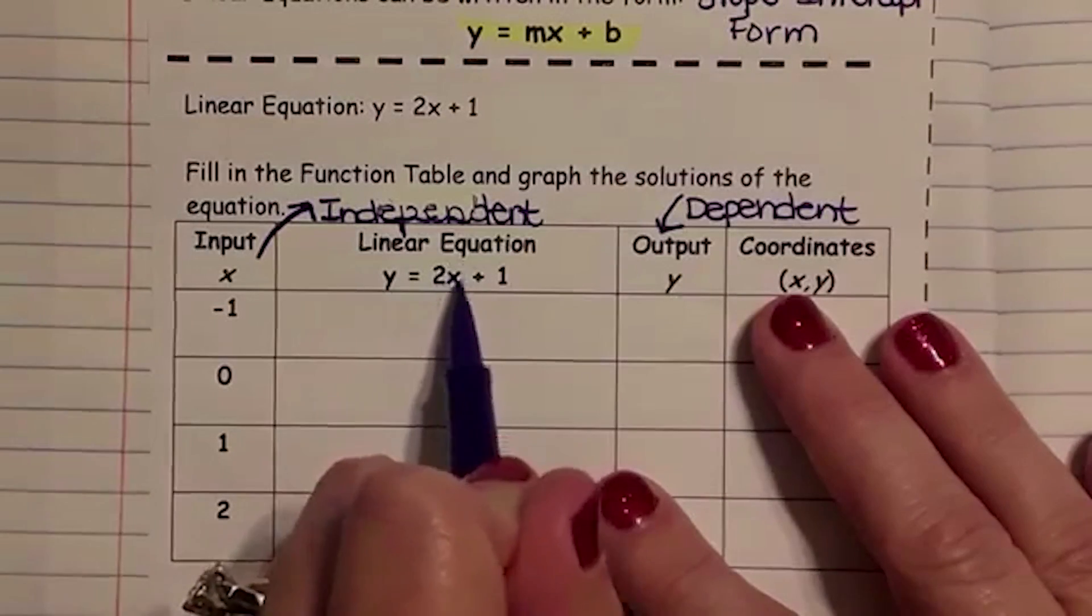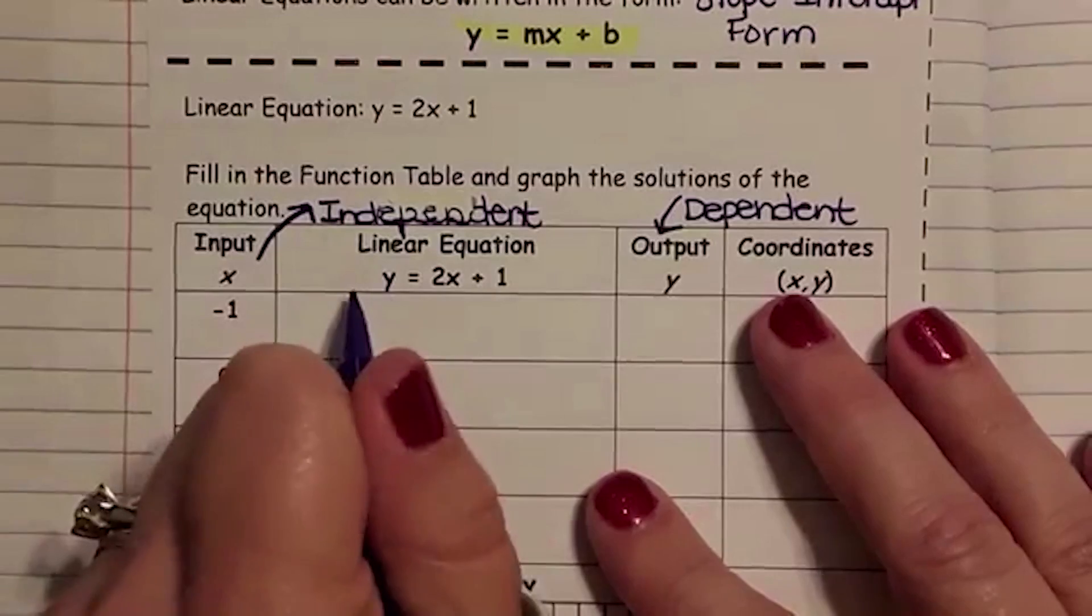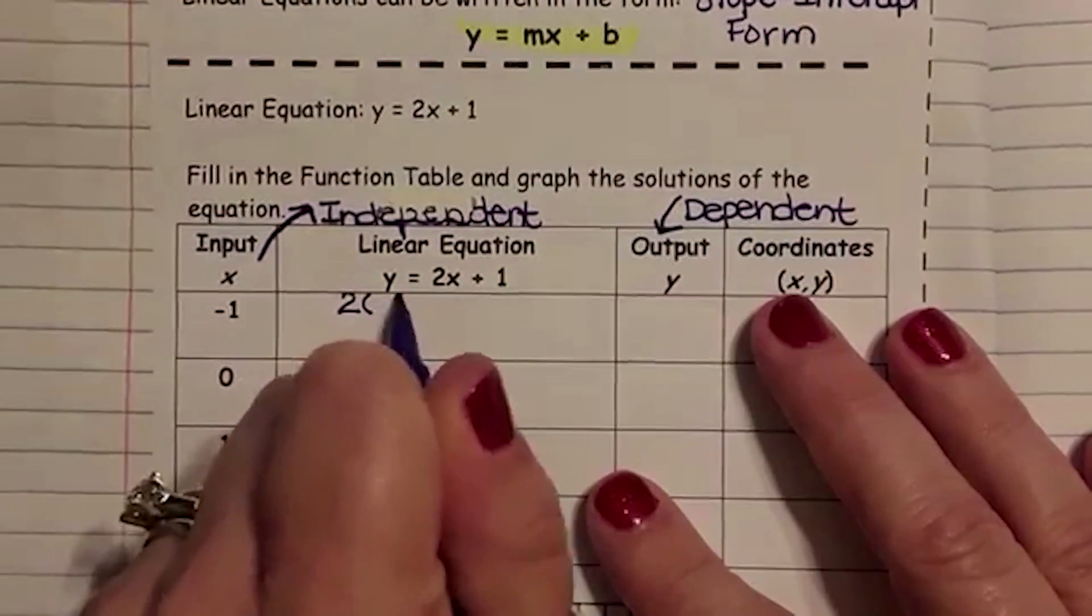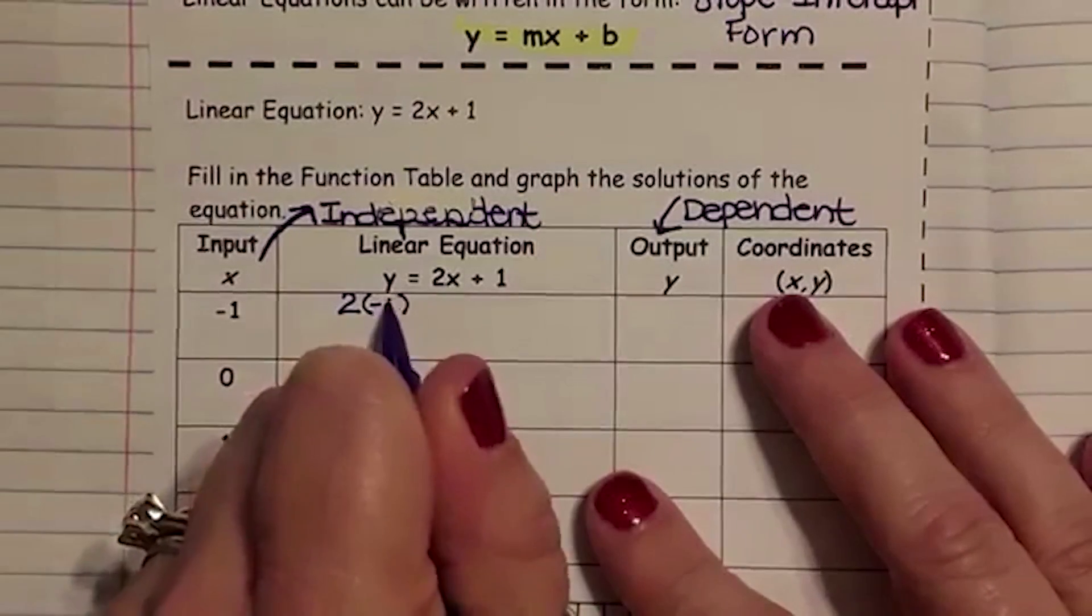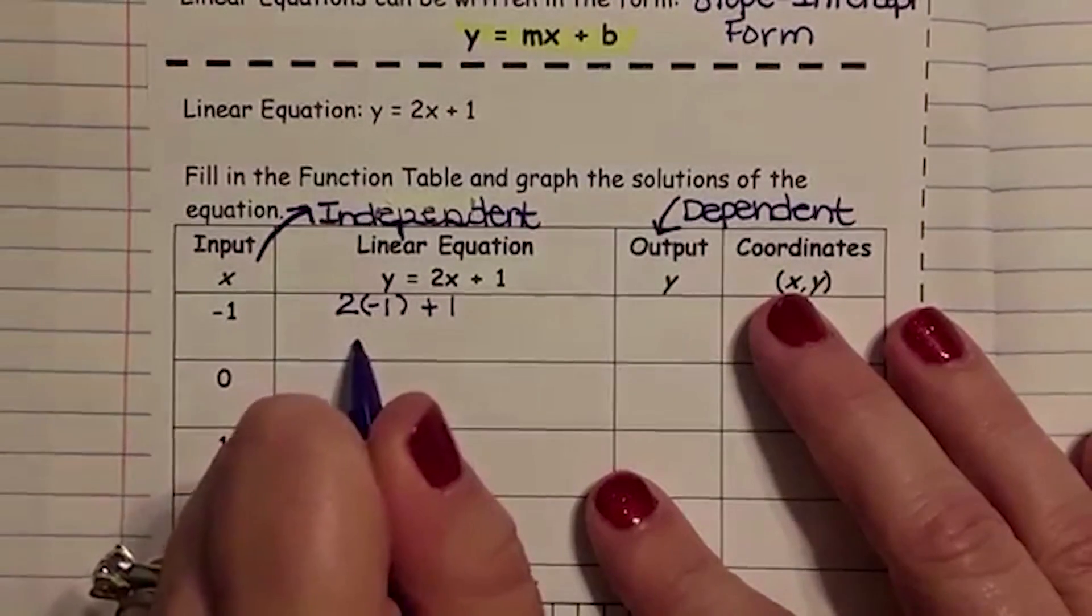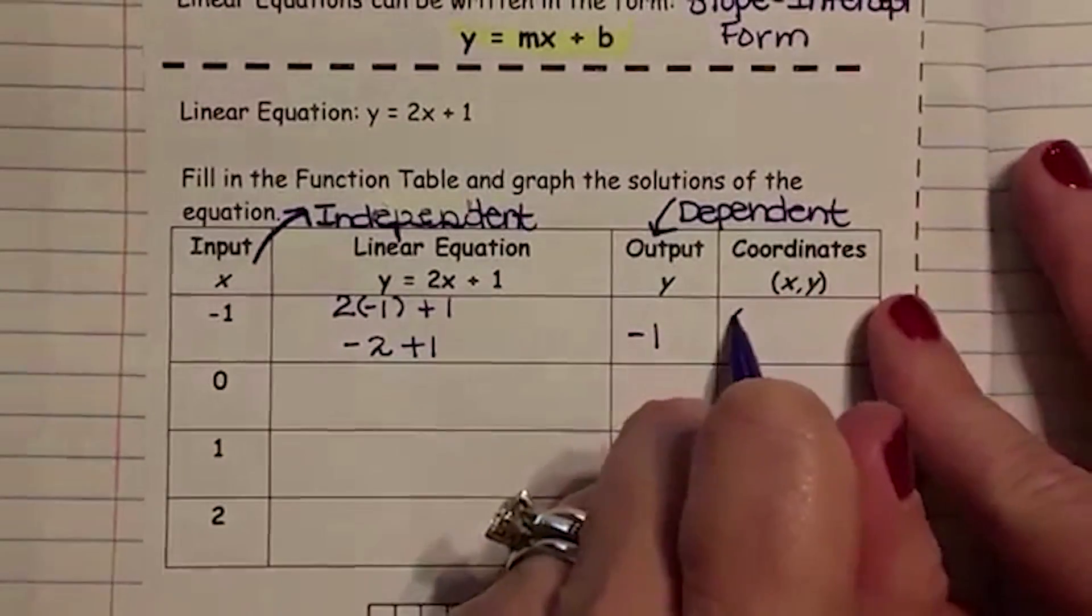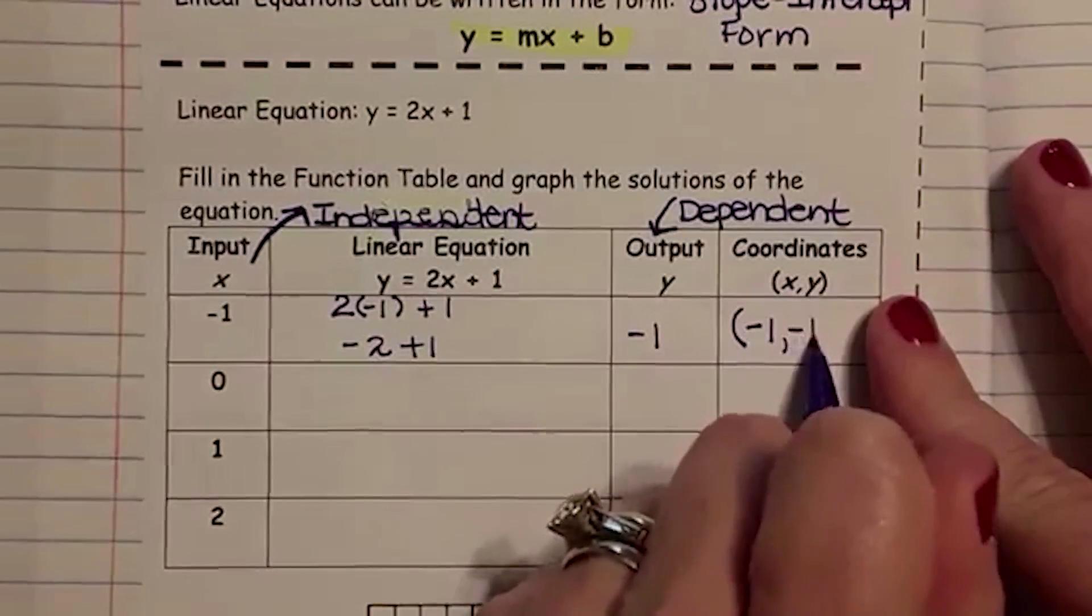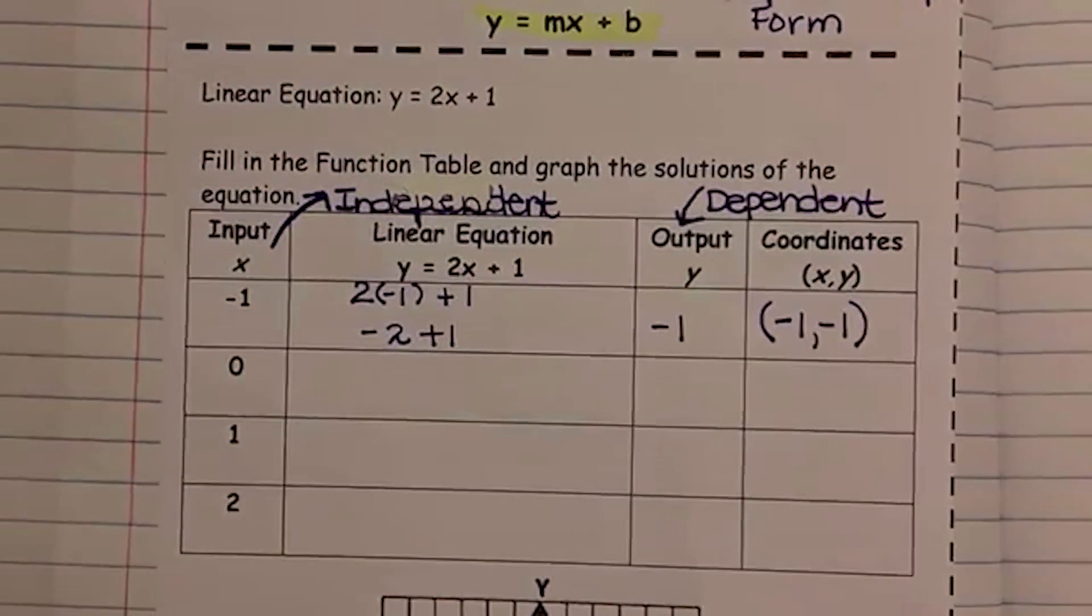So you are going to plug in or replace the x that we provided in the linear equation. So you're going to say two parentheses, because 2x means 2 times x. And you're going to replace that x with negative 1 plus 1. 2 times negative 1 is negative 2. Negative 2 plus 1 is negative 1. So your first coordinates on the coordinate plane or the coordinate graph is negative 1, negative 1.